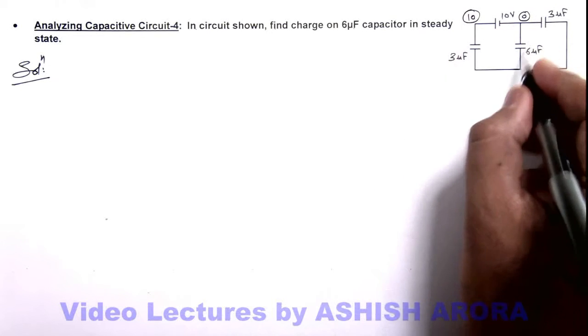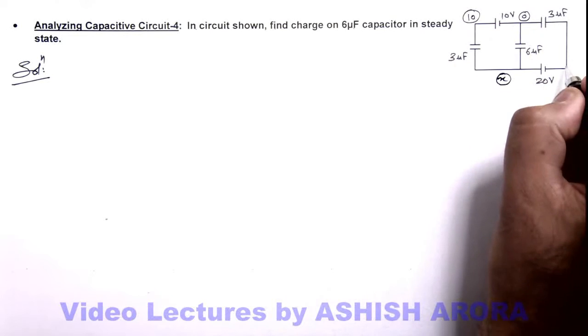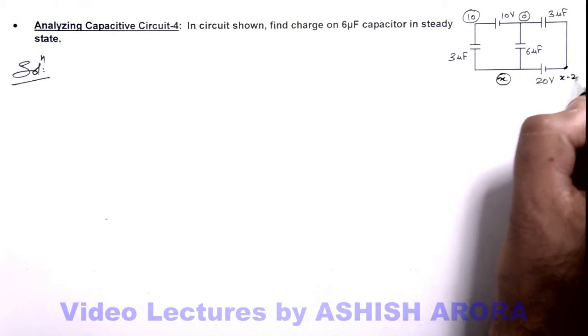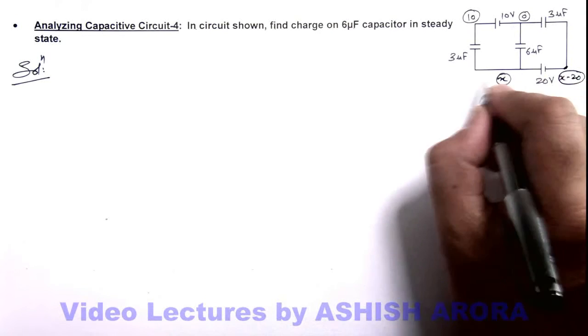On the other side of 6 micro farad capacitor we can take potential to be x. So potential here on the other side of this battery will be x minus 20, because this is 20 volt lower potential than left hand side.